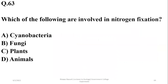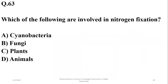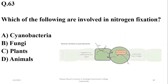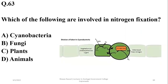While conidia are formed in fungi and pyrenoid lichen. Number 63. Which of the following are involved in nitrogen fixation? Nitrogen fixation is done by cyanobacteria — mainly Nostoc — as well as certain nitrogen-fixing bacteria associated with leguminous plants. So the right option is alpha.